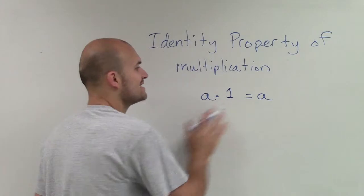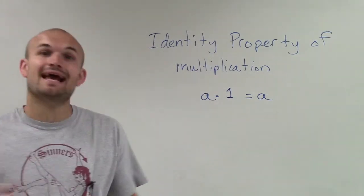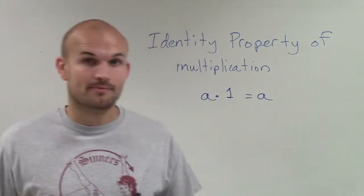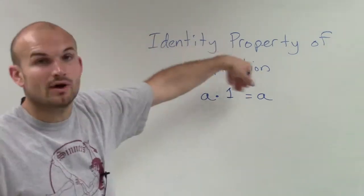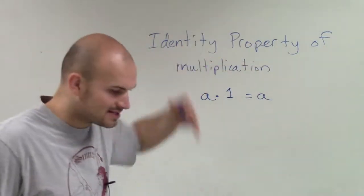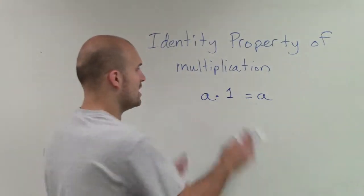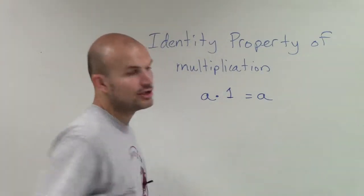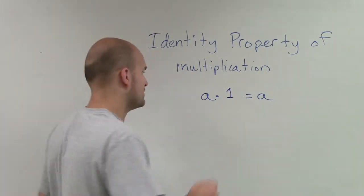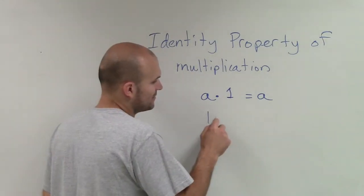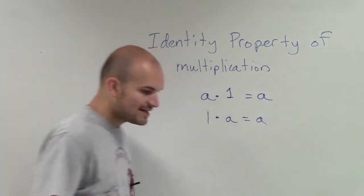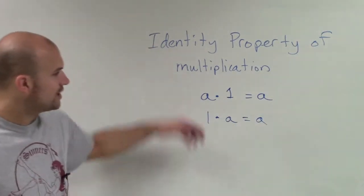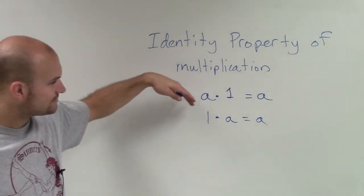As a represents any real number, a times 1 equals a. And that is so important. Also, we can use the commutative property to rewrite this as 1 times a equals a. And that's so important for you to understand.